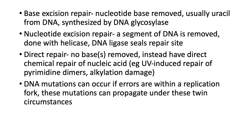For direct repair, there's no base removed. Instead, you have direct chemical repair of nucleic acid — for example, UV-induced repair of pyrimidine dimers, where the two thymines will actually covalently link with each other, and you can get alkylation damage from this. DNA mutations can occur if there are errors within a replication fork, and these mutations can propagate under these circumstances.